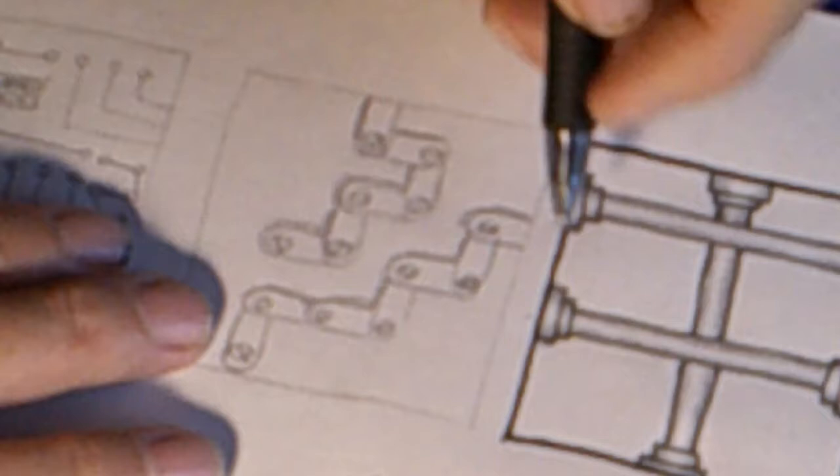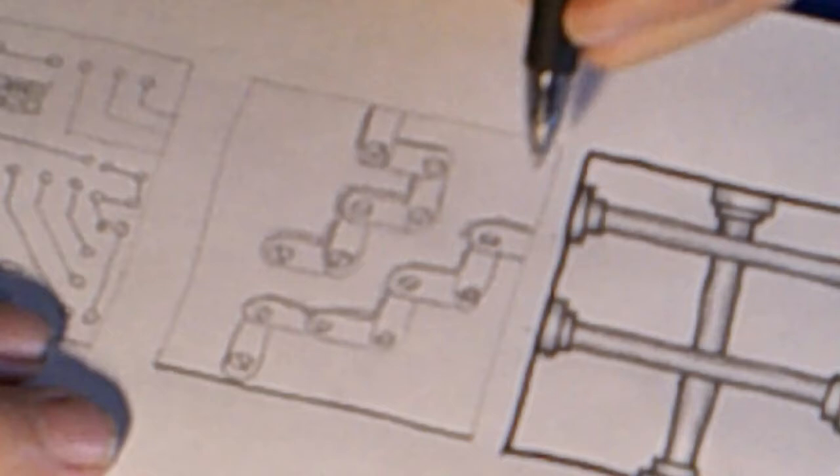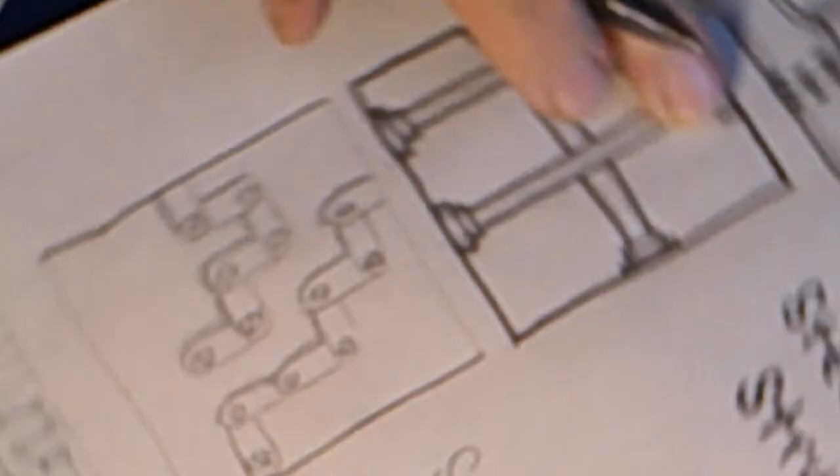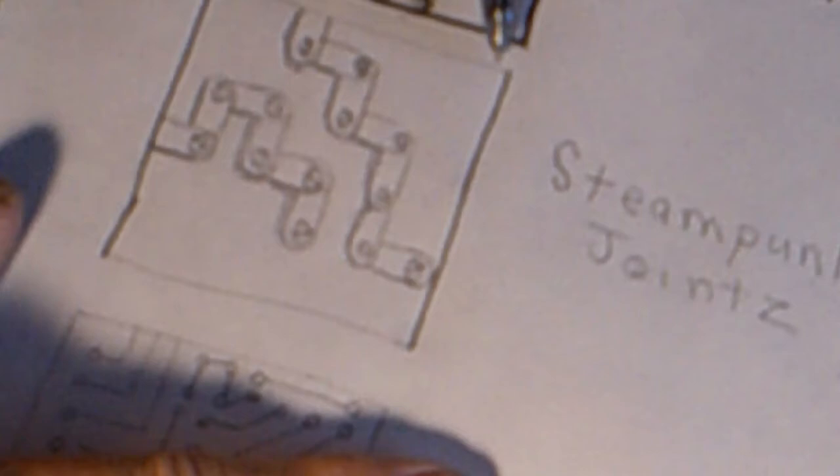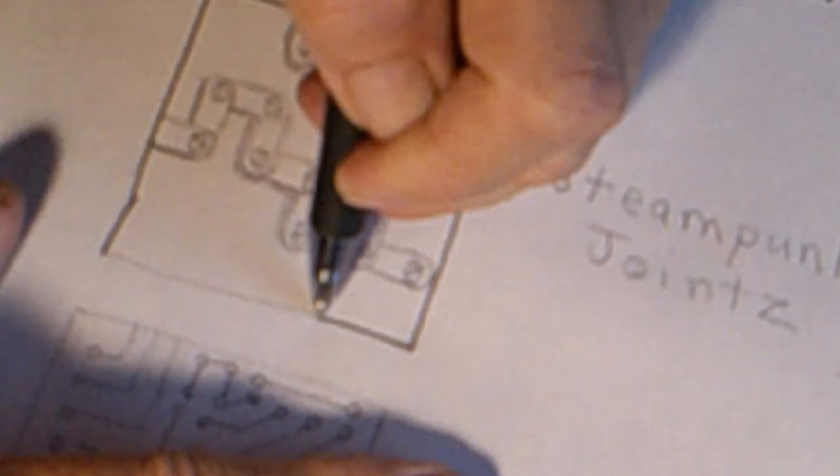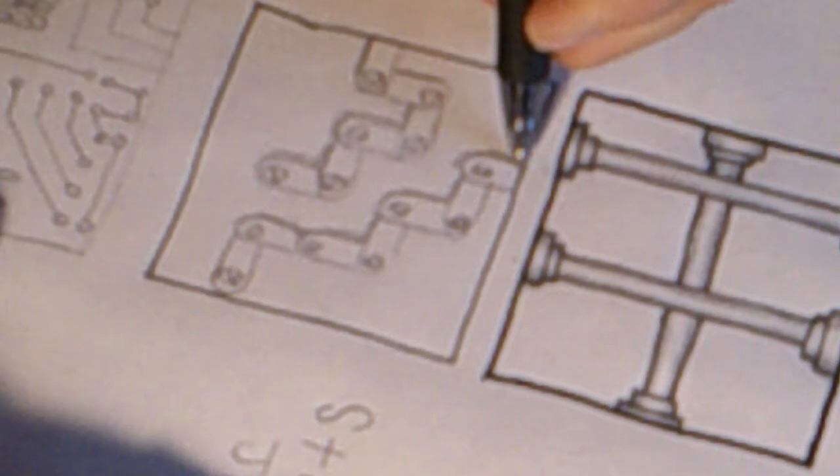We start off by drawing ourselves a square and anywhere you like along one of the sides, I'm going to draw a small half oval.